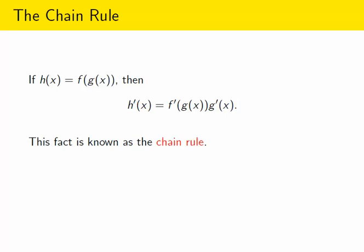This fact is known as the chain rule. The reason it's called the chain rule is because you can have one function inside of a function inside of another function inside of another function, and so on. And if you have something that complicated, you just have to use this rule over and over in a chain of calculations. But let's start with simpler examples than that.